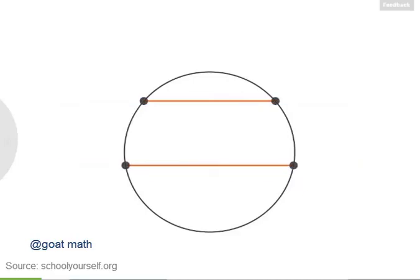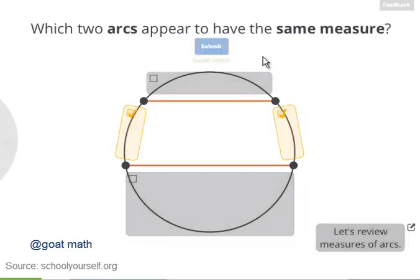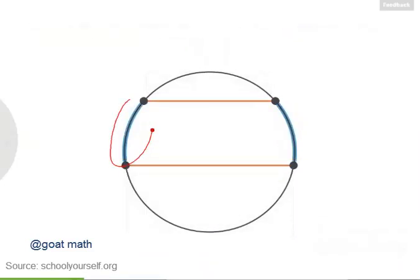Let's draw points at the ends of these chords. Now these chords divide up the circle into four arcs: this one on top, this one on the right, this one on the bottom, and this one on the left. Which two of these arcs appear to have the same measure? It looks like these two arcs have the same measure. Let's see if we can prove that this is true.